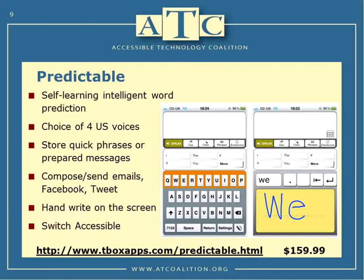Another interesting feature of Predictable is that you can write with your finger — instead of using a keyboard, you write on the screen and it translates your handwriting into text. You have to be careful about writing clearly; cursive doesn't work well. It's also switch accessible for students who don't have the fine motor to access the keyboard, with both automatic scanning and user scan, working through Bluetooth switch boxes. It is a fee-based program at $159.99.